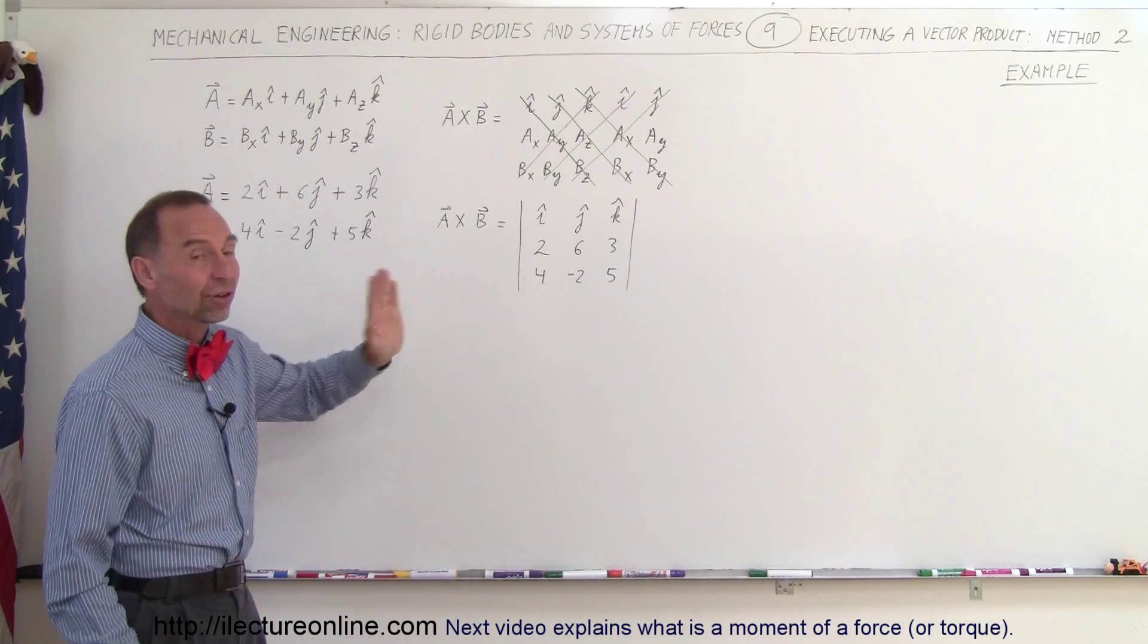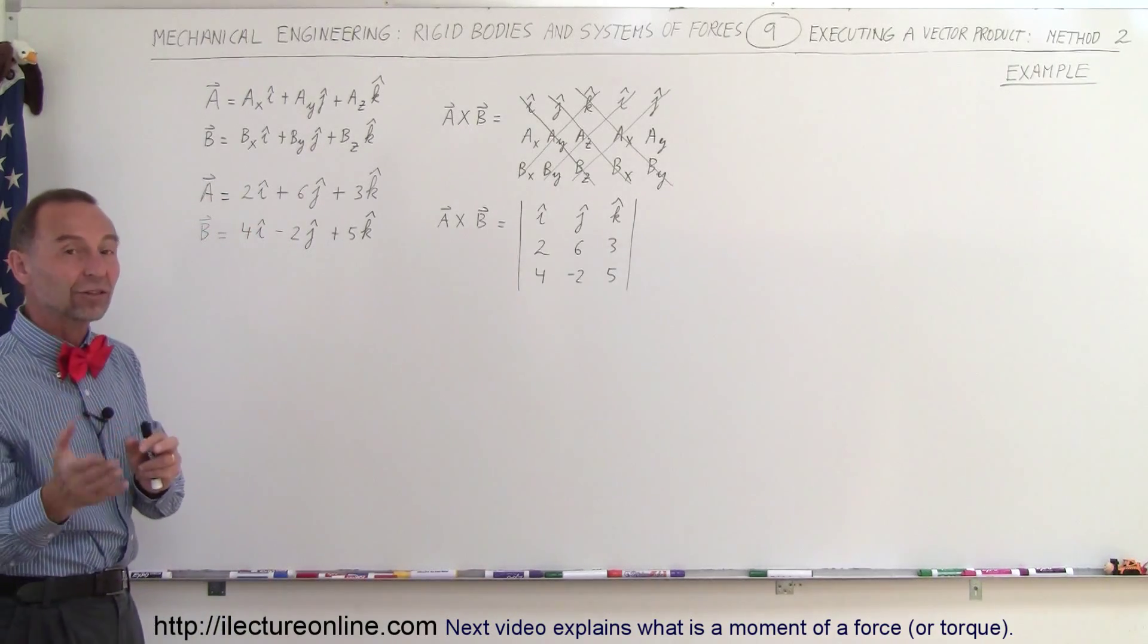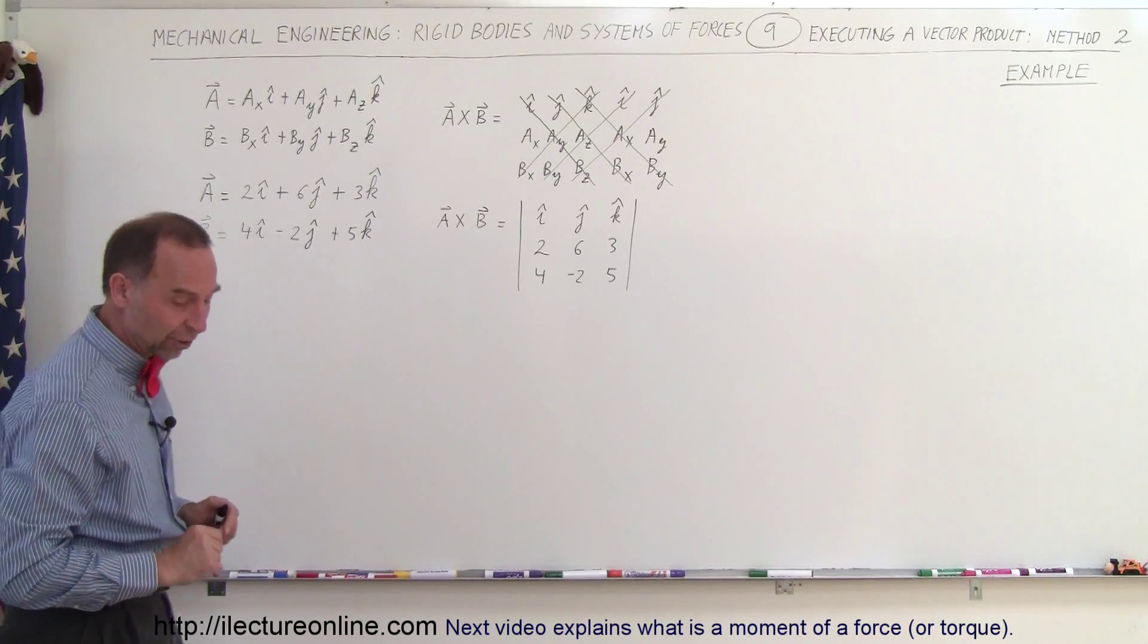We draw a matrix and then what we do is when we have our two vectors, vector A and vector B, we use the exact same two vectors as we did in the previous method so that we can compare the answers to make sure we get the very same results.